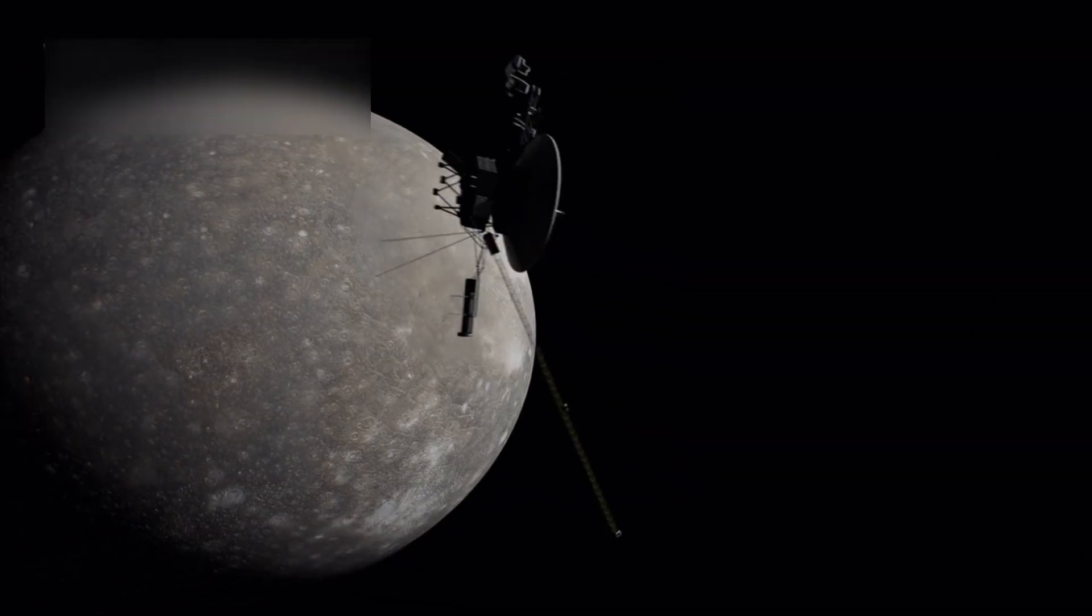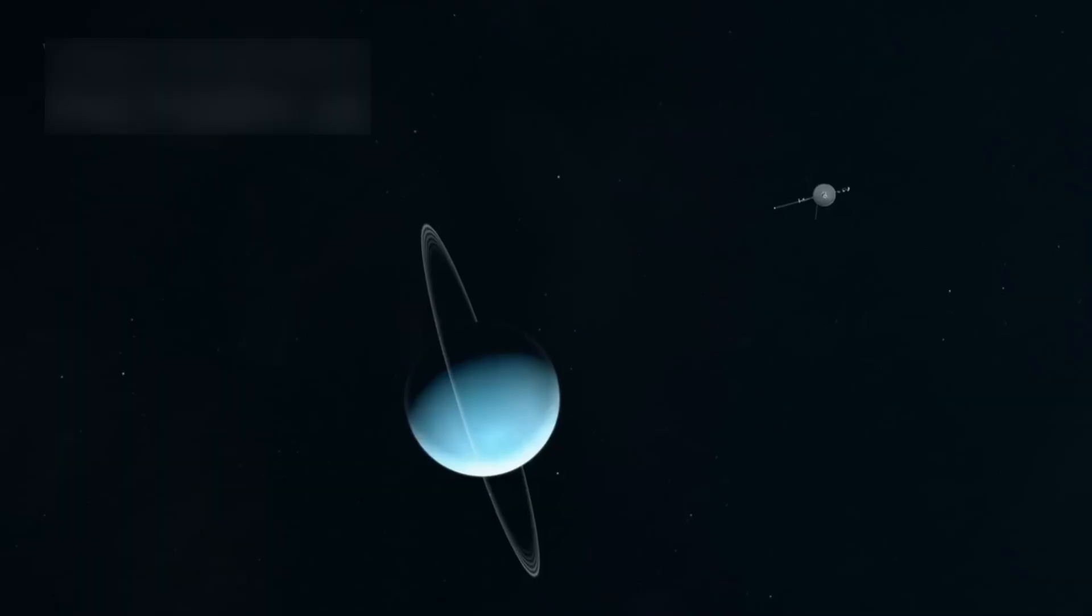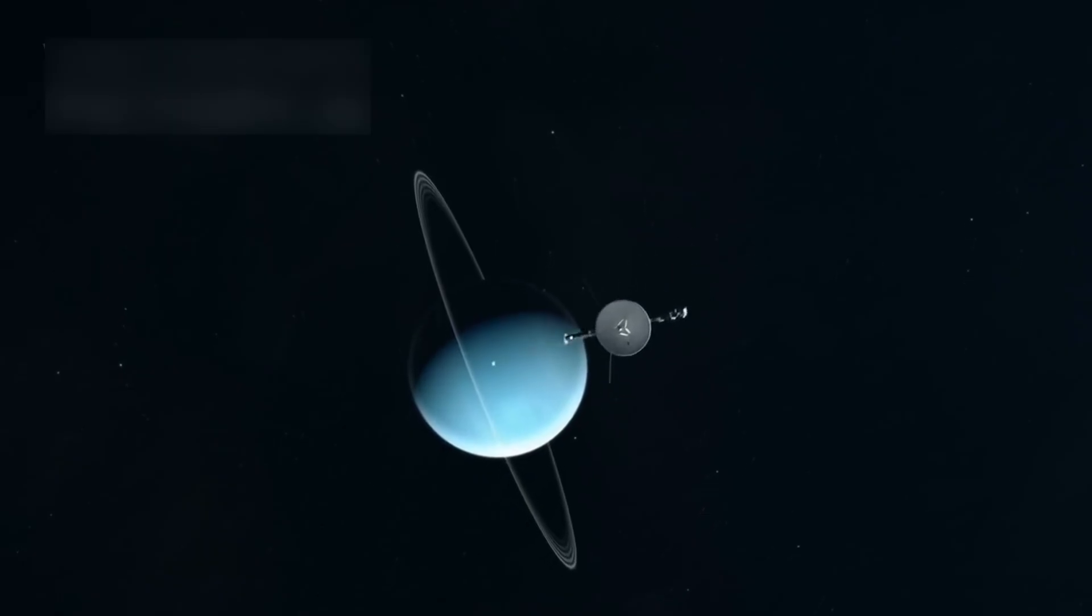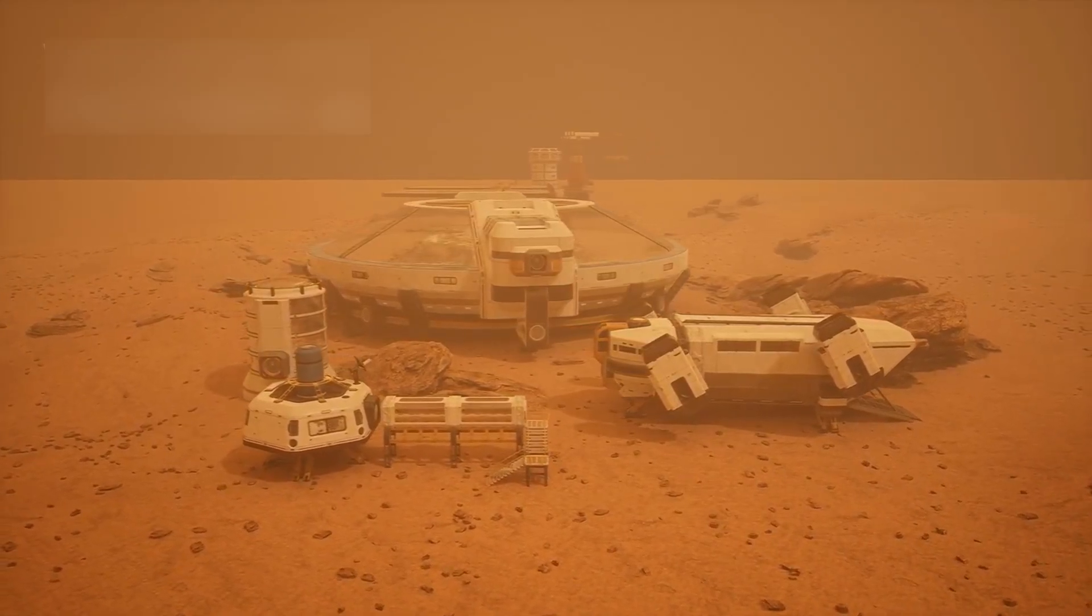Every transmission Voyager 1 sends is a message from the edge of the known universe. It travels in silence, powered by a fading generator and guided by an ancient computer, yet its impact is loud and clear. This is what human determination looks like when it's pointed at the stars.